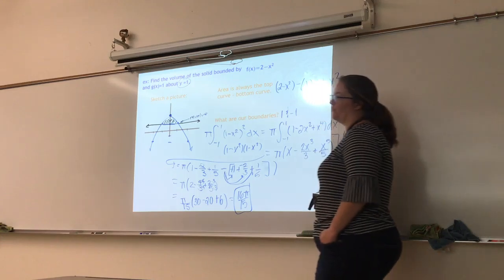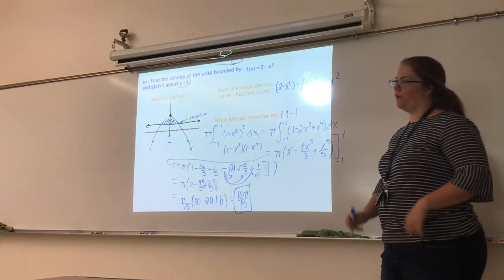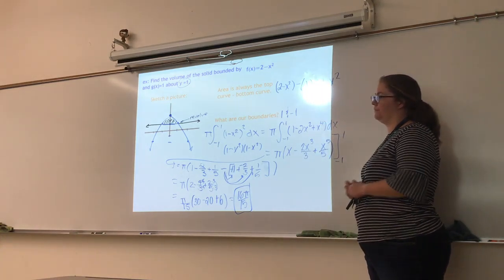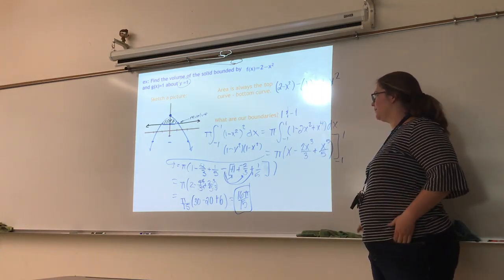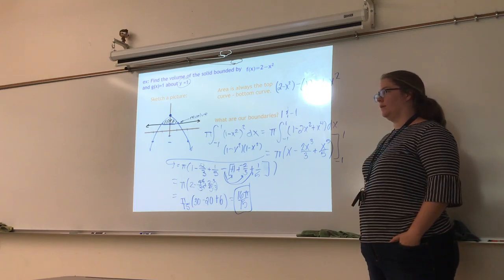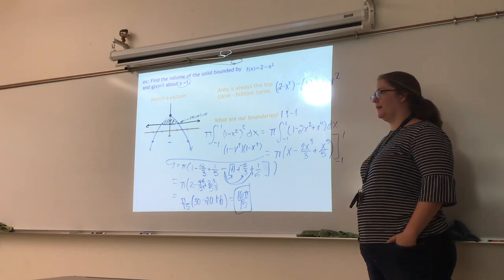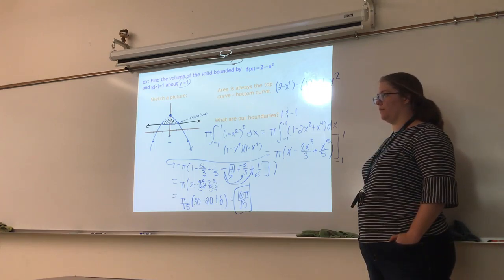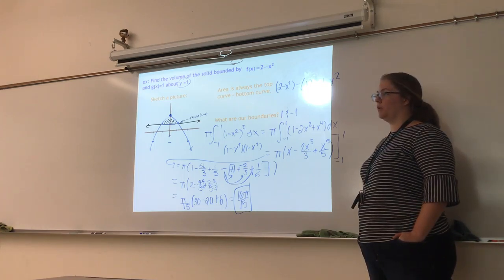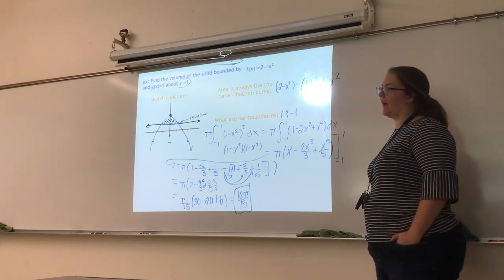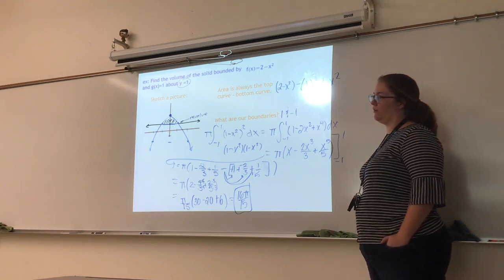Volume equals 16 pi over 15. That is it for the notes. Tomorrow we learn the washer method — what happens when there's a gap between the curve and the axis you're revolving around.